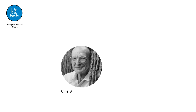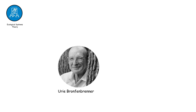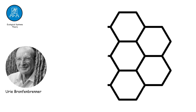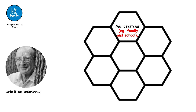Ecological systems theory, proposed by Urie Bronfenbrenner, explores how individuals are influenced by multiple nested environmental systems, including micro-systems like family and school, meso-systems, exo-systems, macro-systems, and the chrono-system.